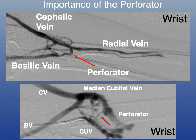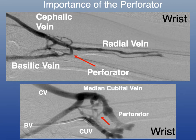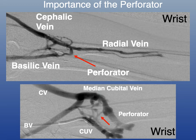Looking at these venographic images, the red arrow is showing a perforator — a connection from the deep vein to the superficial veins. Normally blood flows from superficial into deep veins, but with a fistula, arterialization of the deep vein causes blood to reflux via the perforating vein, often into a median cubital vein and ultimately into a cephalic or basilic vein, or in the case of dual outflow, both veins. The bottom image shows a more complex network of bridging and perforator veins.